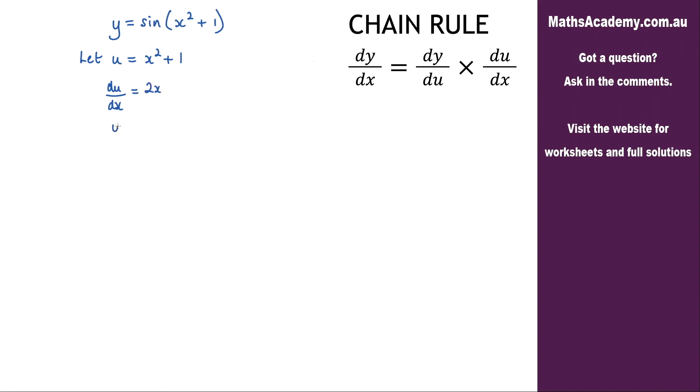So what we've got so far is that y is equal to sine, and instead of the x squared plus 1 we've made this substitution and we're now using u. And now I can go ahead and differentiate this to get dy by du is equal to cosine of u. When you differentiate sine you get cosine.